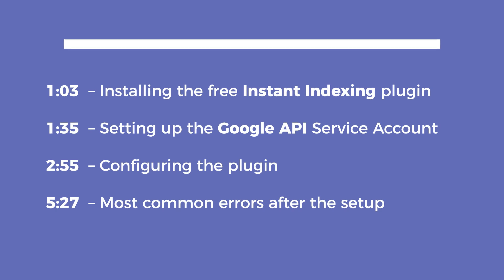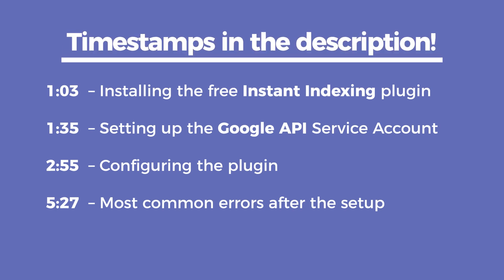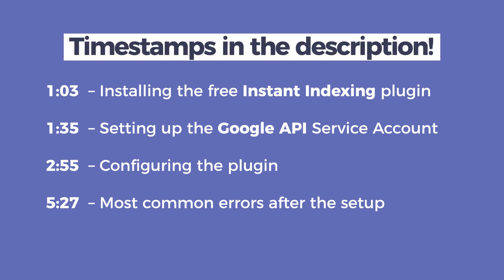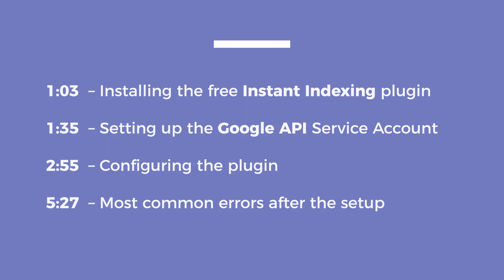There are three major steps to getting your website crawled immediately: installing the free Instant Indexing plugin, setting up the Google API service account, and configuring the plugin. You can use the timestamps in the description to jump to them, or to the most common errors that appear after the setup.